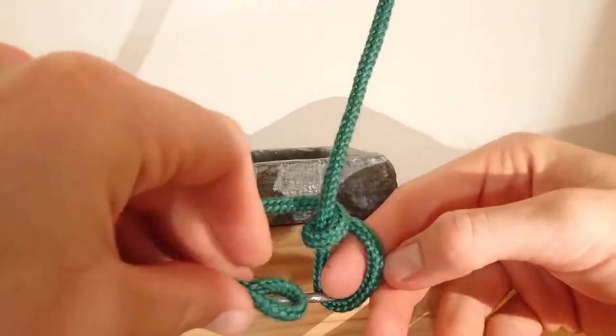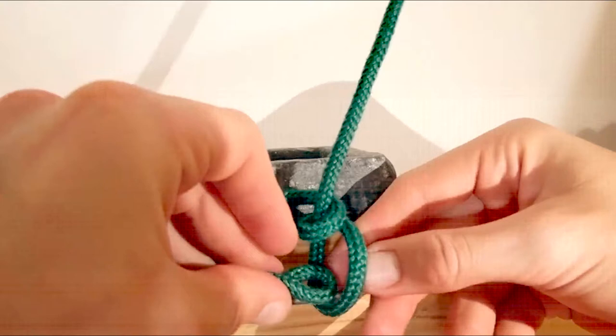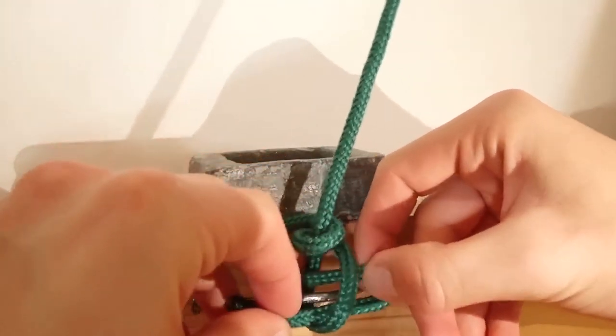Next, form a closed loop in your left hand with the remainder of the standing end. This can be done in the same manner you would start a sheet bend knot. Pass the closed loop through the fixed loop.